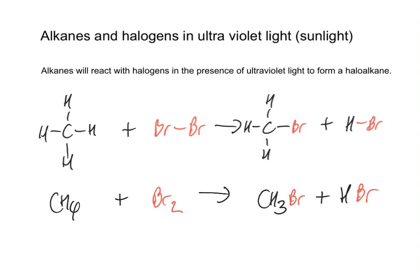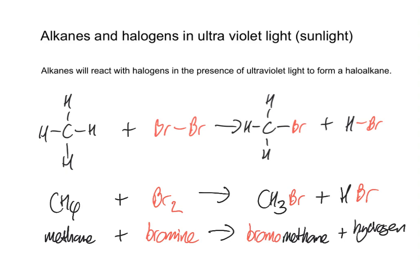And in terms of the word equation for this, this would be methane, plus bromine, reacts to give a new product called bromomethane, plus hydrogen bromide.